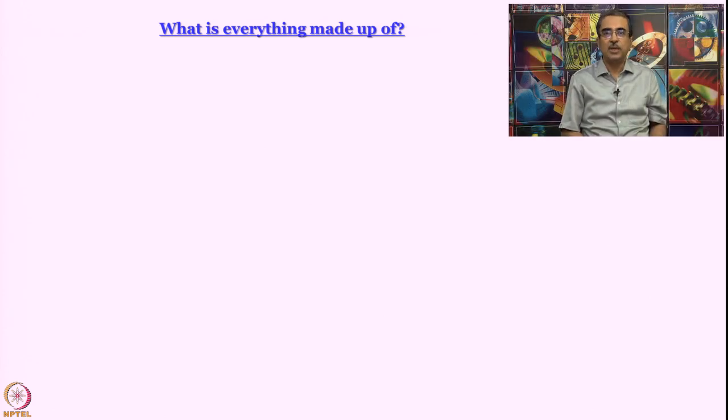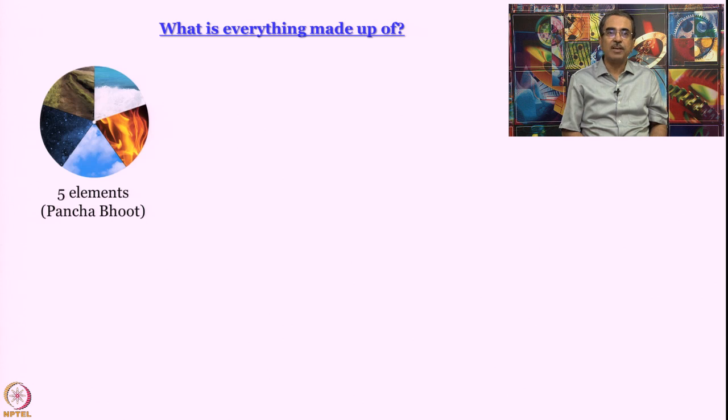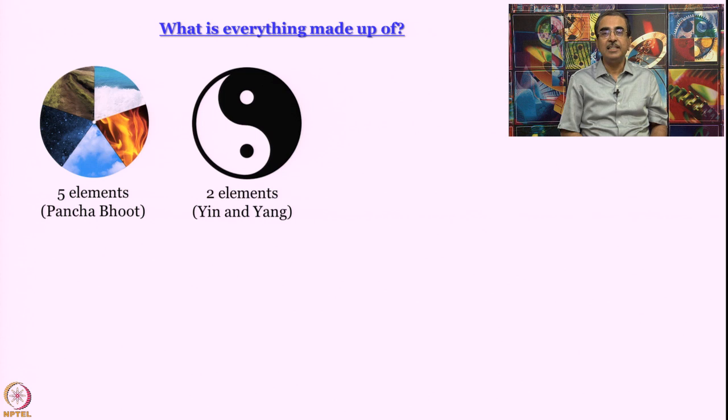The question that we try to answer in this part of the course is something that mankind has asked forever: what is everything made up of? In our ancient Indian culture it was believed that everything is made up of five elements—Panchabhut that most of us would know about. This philosophical way of answering the question actually makes sense. In ancient Chinese civilization everything was believed to be made up of two opposing forces: yin and yang, good and bad, up and down.